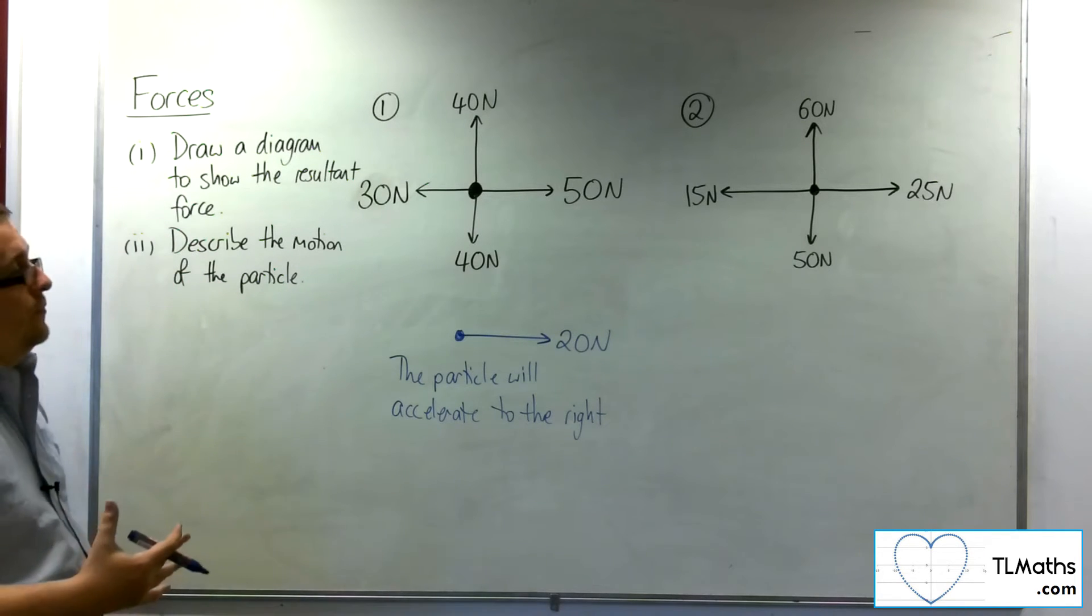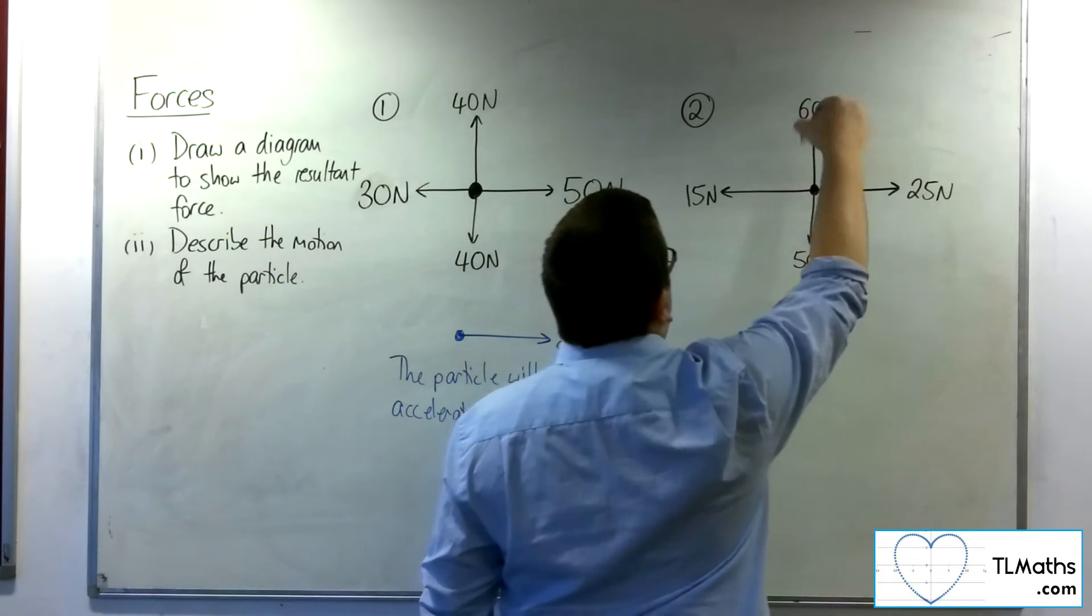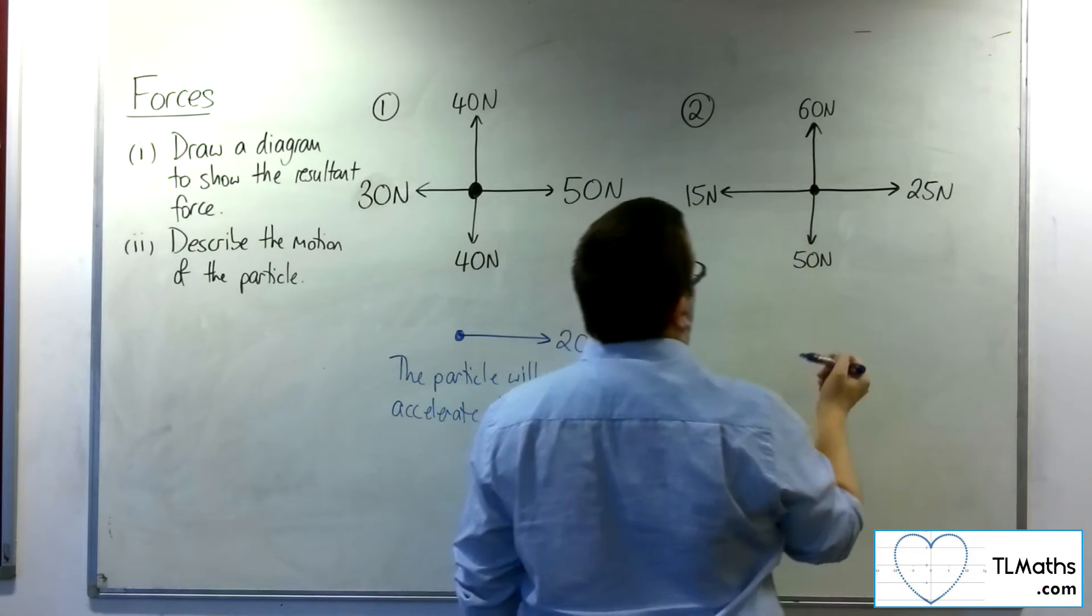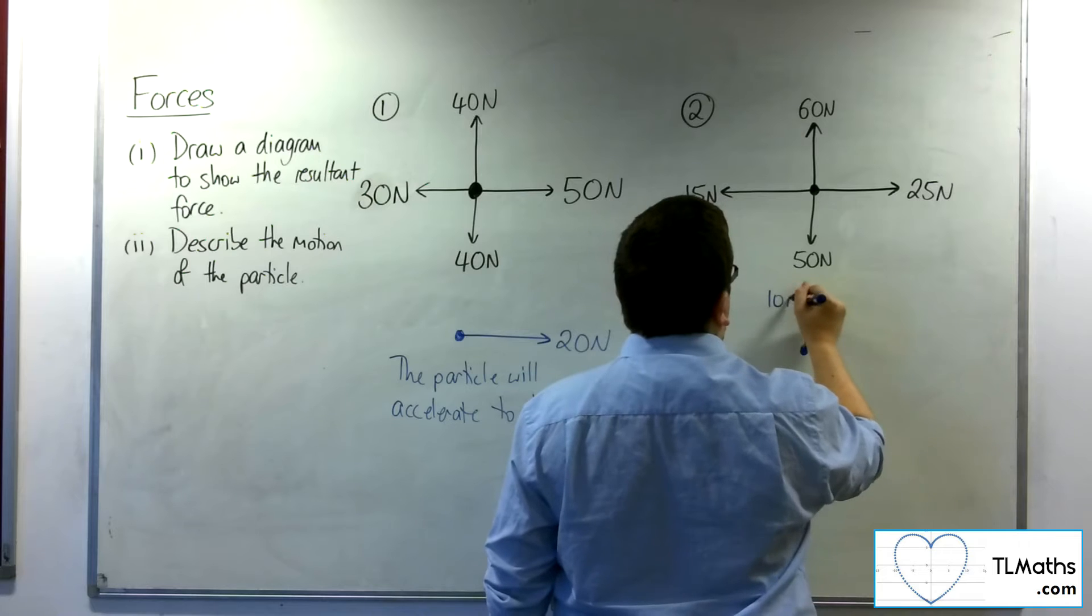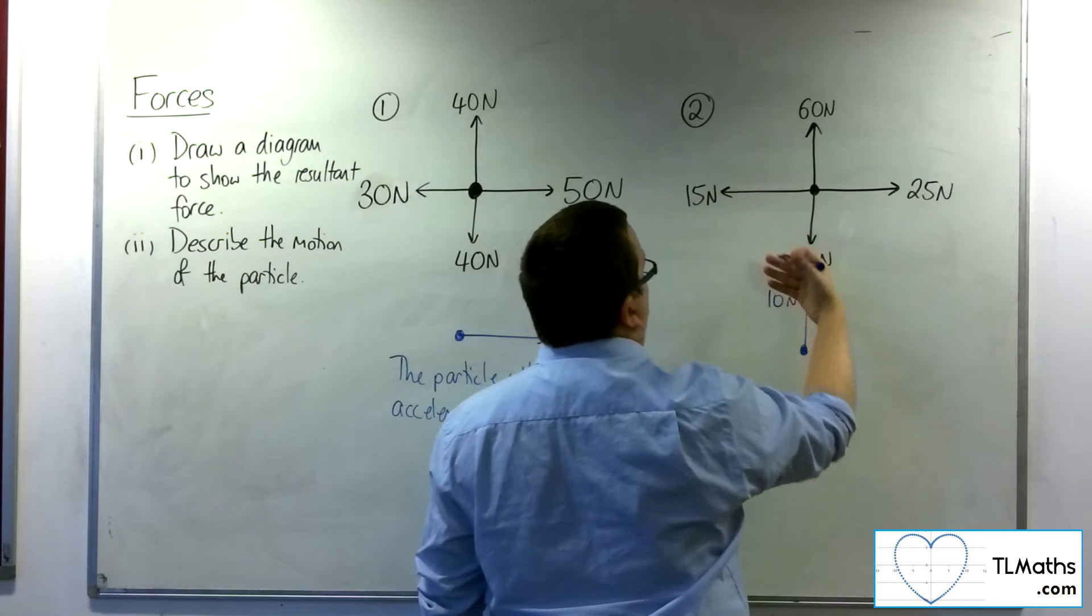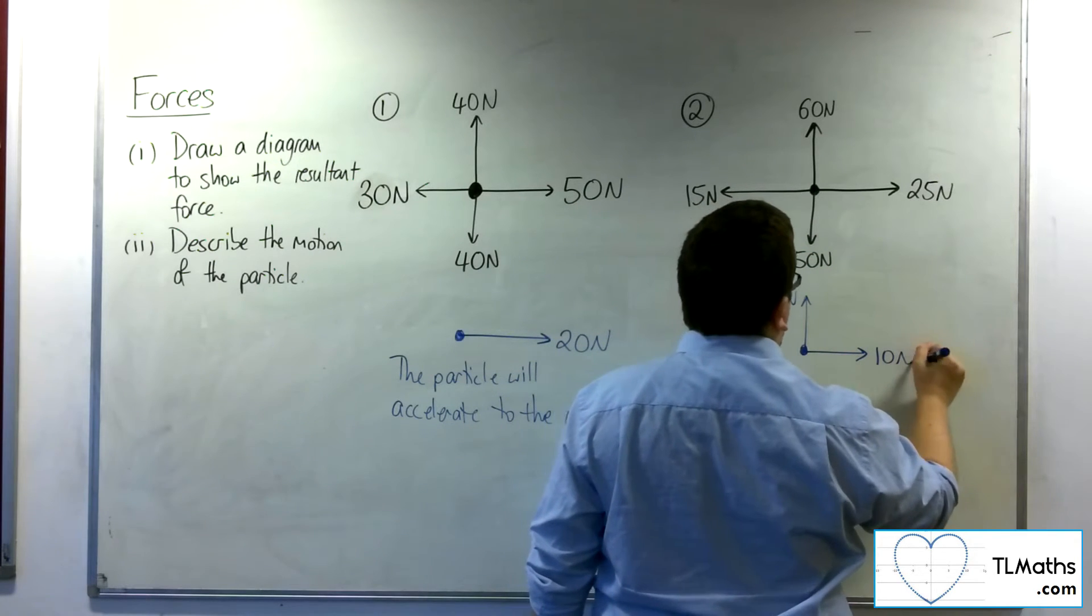Let's have a look at number two. Now, in this case, we've got 60 newtons going up, 50 newtons going down, so the resultant vertical component will be 10 newtons. And we've got 25 newtons going to the right, 15 newtons going to the left, and so we've got a resultant of 10 newtons going to the right.